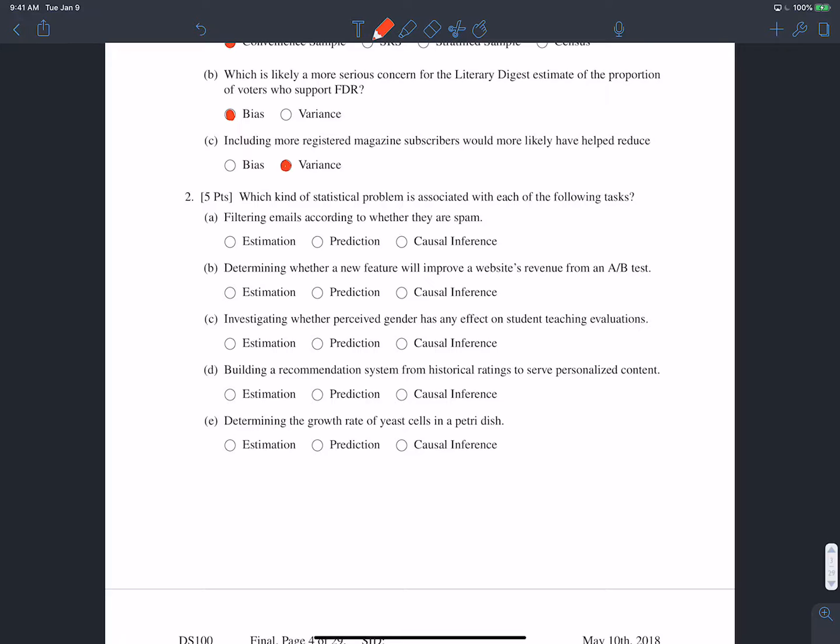Estimation is the problem of being given some sample and we want to try and estimate the value of some population parameter. So it's like if I go and sample 300 people at Berkeley and I want to try and find the average height of people at Berkeley, that's an estimation problem.